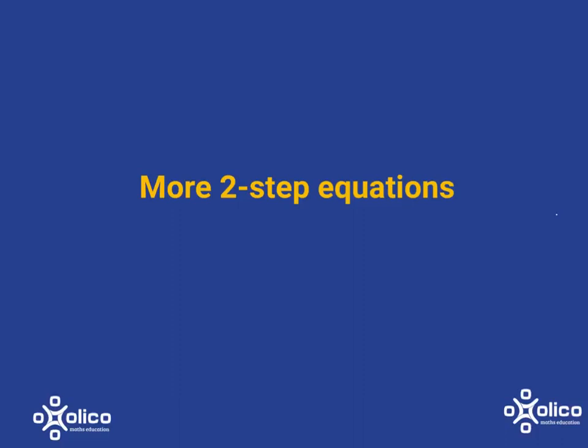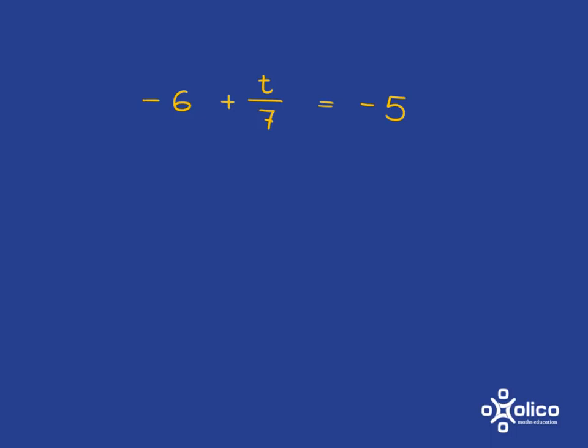We're going to do a couple more examples of two-step equations, ones that have got lots of negative numbers all over the place. If we're faced with a monster like this, no need to panic. We want to solve for t, so we want to get t all on its own.